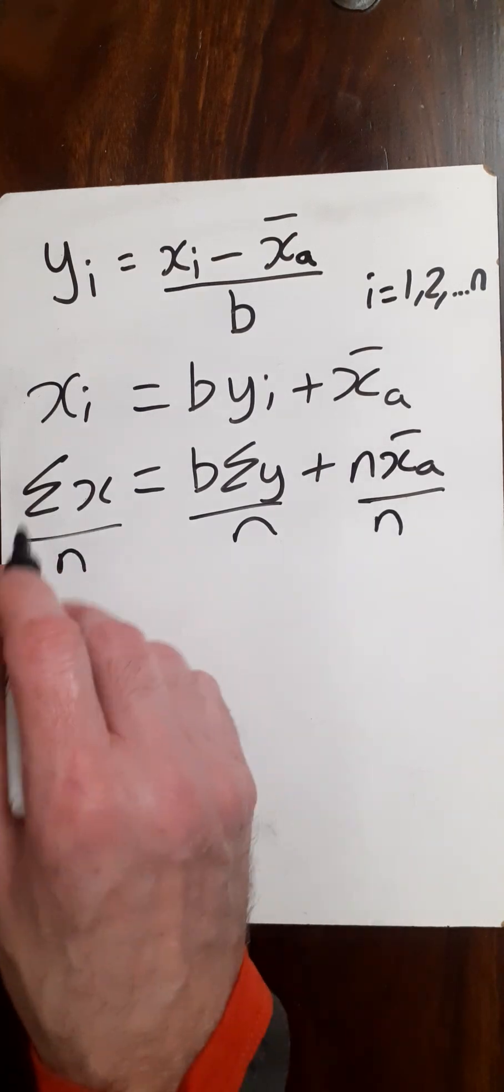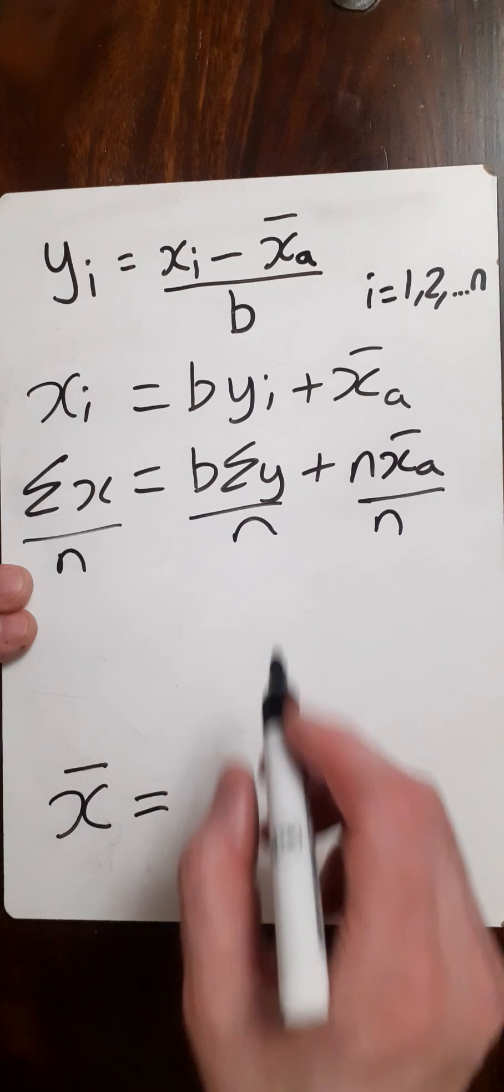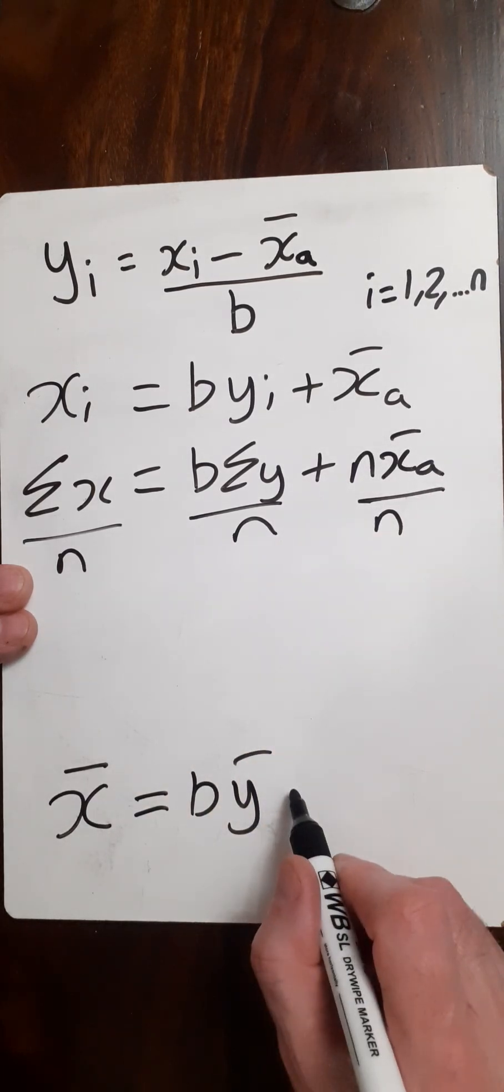And then that will give us our x bar, which we have here. This will give us the mean of the y's times b, and then this will just give us our assumed mean.